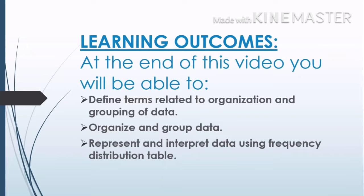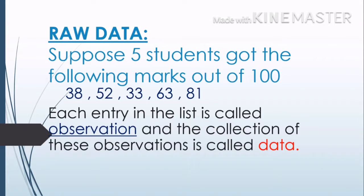Before starting with the problems, let us first discuss some terms related to organization and grouping of data. Let's start with raw data. Suppose there are five students who got the following marks out of 100: 38, 52, 33, 63, and 81. Each entry in the list is called an observation, and the collection of these observations is called data or raw data.